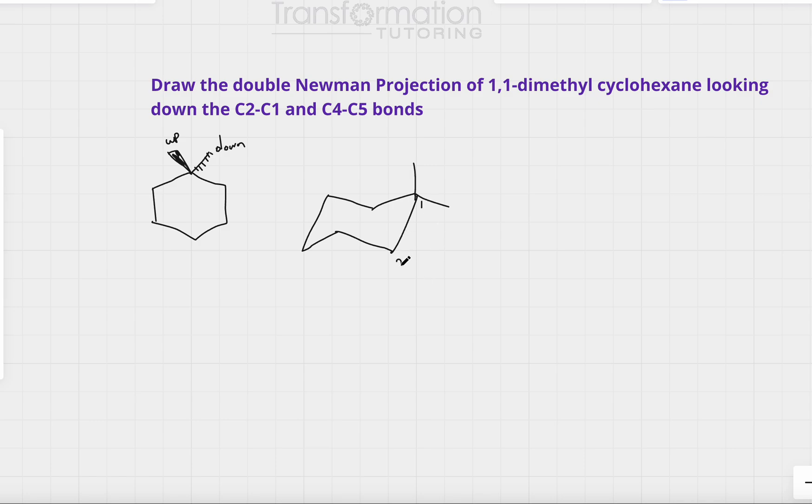This is carbon 1. This is carbon 2. This is carbon 3, 4, 5 and 6. We are asked to look at C2 to C1. So what I'm going to do is I will also show the hydrogens because that's what I will have to show in my Newman projection as well. So the carbon 2 has one hydrogen up and one down. On the carbon 2 the down position is straight down and the up position is up parallel to this line. I will do the same for hydrogen for carbon 4 and carbon 5.